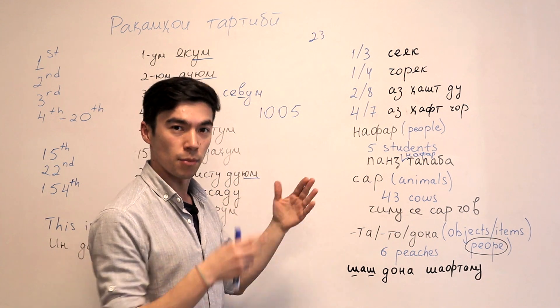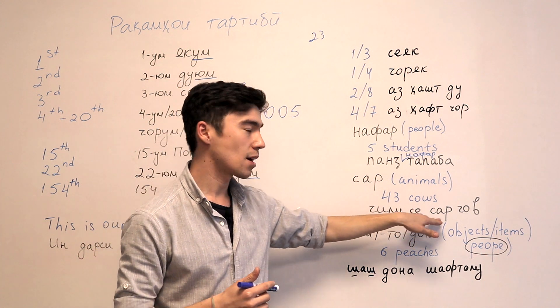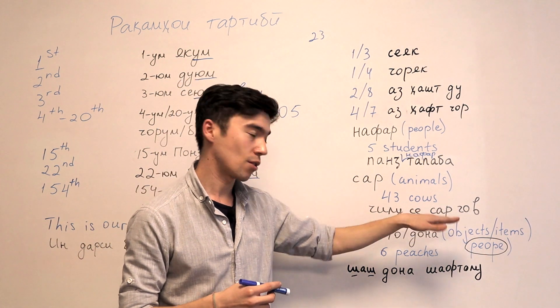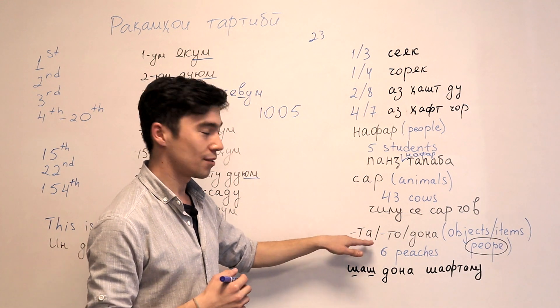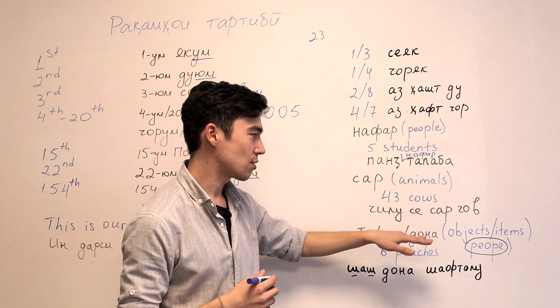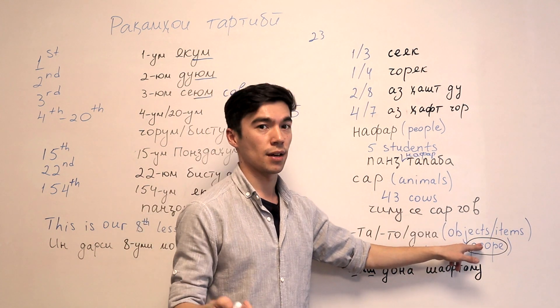SAR we use for animals. Like 43 cows will be CHILUSESARGO. CHILUSESARGO. CHILUSESARGO. All right. And the last one. TA. TO. OR DONA. So for objects, items. And even for people we use that. For people.